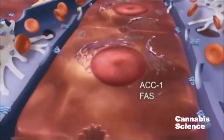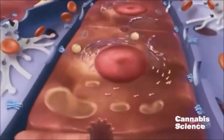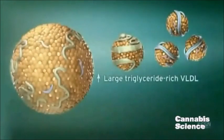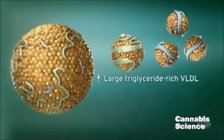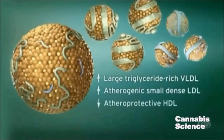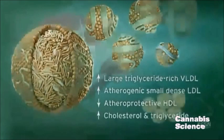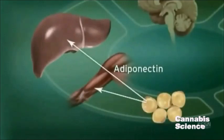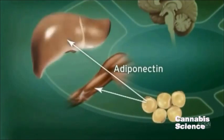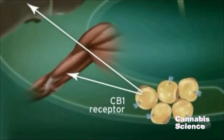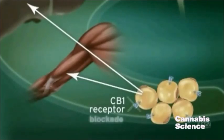Increased fatty acid synthesis can lead to production of large triglyceride-rich VLDL. Large triglyceride-rich VLDL sets the stage for the atherogenic lipid profile of small, dense LDL, decreased levels of atheroprotective HDL, and overall increases in cholesterol and triglyceride levels. Adiponectin, another hormone secreted by adipocytes, regulates lipid and glucose metabolism and is believed to regulate fatty acid oxidation in muscle and liver, improving insulin sensitivity. CB1 receptor stimulation in adipocytes reduces adiponectin, while CB1 blockade increases adiponectin synthesis.